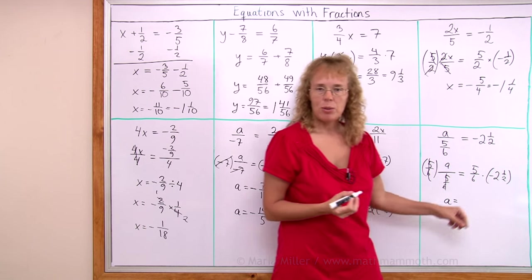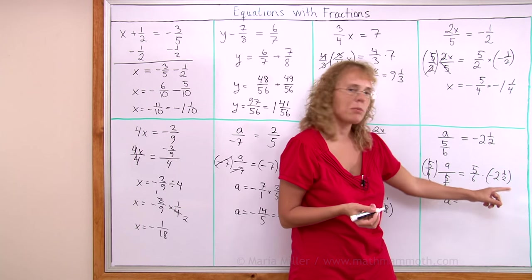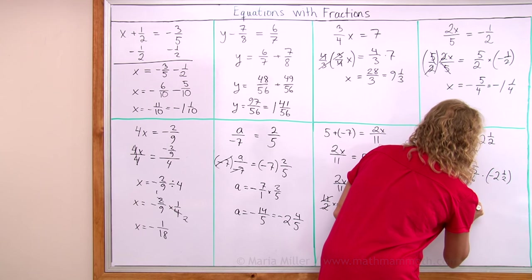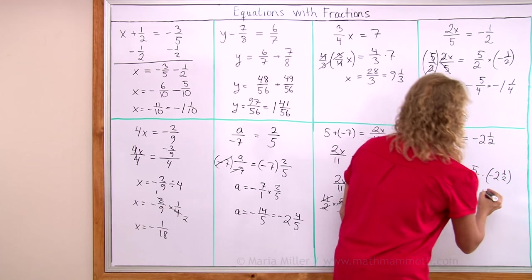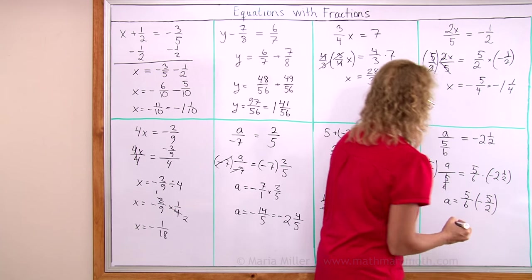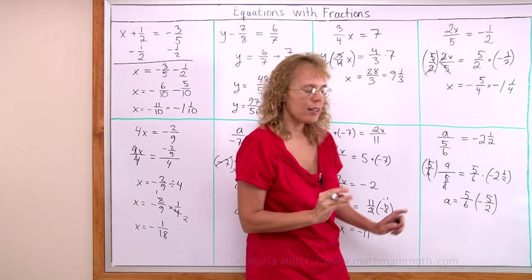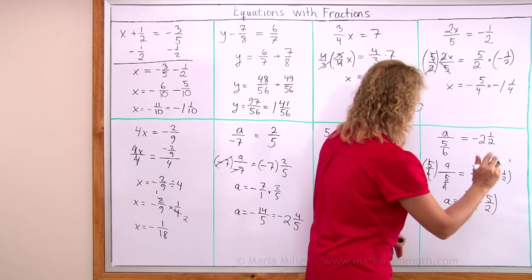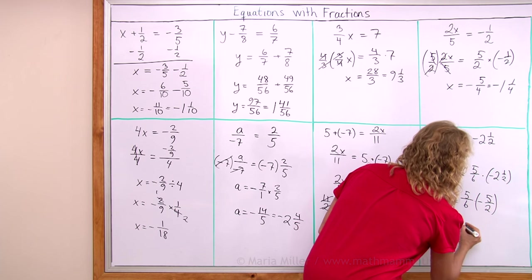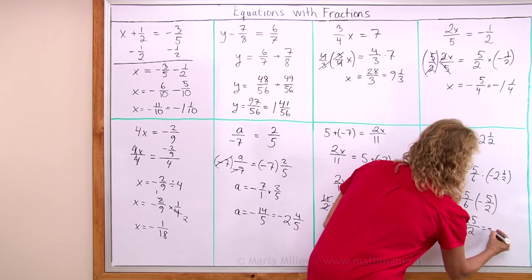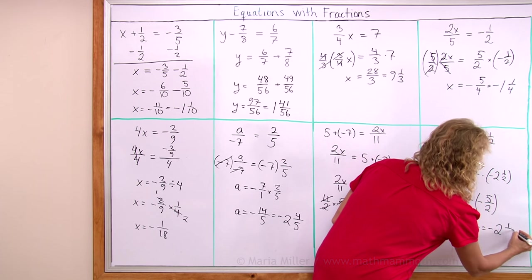Over here a fraction multiplication but there's a mixed number. You need to change that into a fraction first. So we have 5 sixths times negative 5 over 2. Here I will multiply, nothing cancels or simplifies before multiplying. So I'll get 25 over 12 but it is negative. Negative 25 over 12 which is negative 2 and 1 twelfth. Okay, all done with these equations and I hope this was helpful.